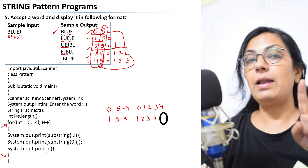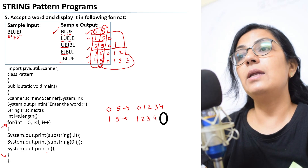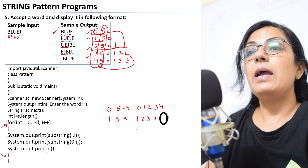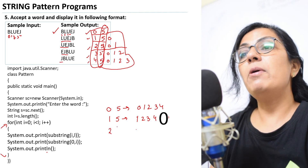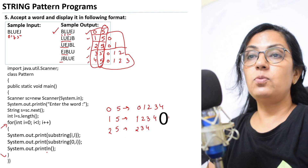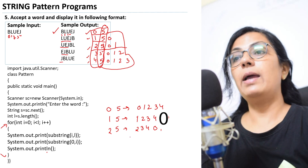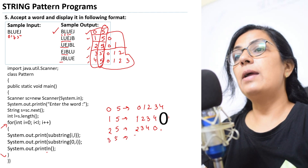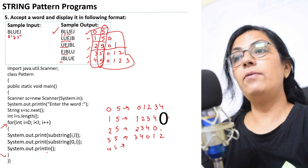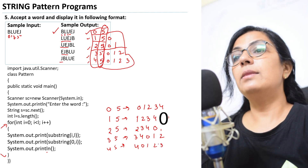Continuing: i=2, substring(2,5) gives UEJ using print; substring(0,2) gives BL — line three is UEJ BL. Then i=3: substring(3,5) gives EJ; substring(0,3) gives BLU — line four is EJ BLU. Then i=4: substring(4,5) gives J; substring(0,4) gives BLUE — line five is J BLUE. So you get the combined output pattern.